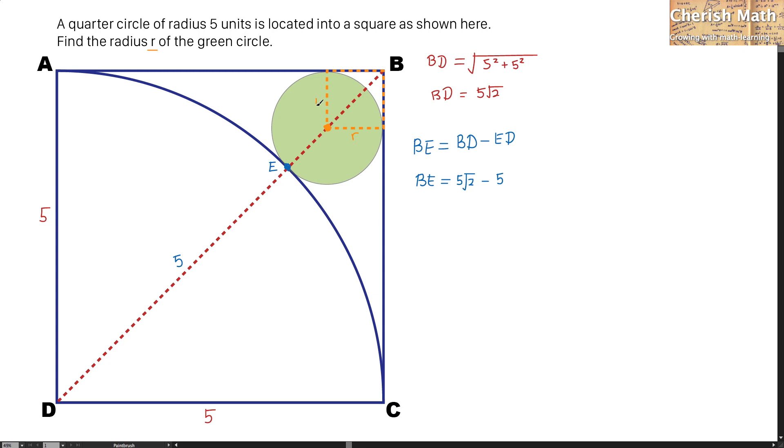And for this line, the radius too. From the center of the green circle to point E here is radius as well. And now I'm trying to work out what is the length of BE again by referring to this part here.